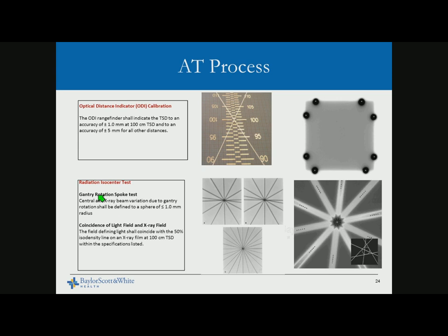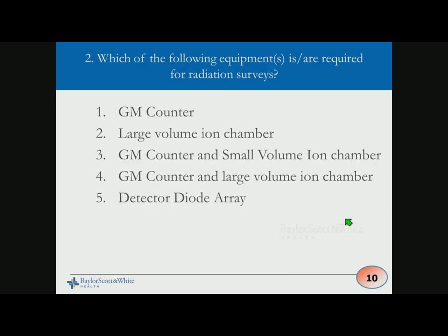Radiation isocenter testing is very important. We do this with star shots — the conventional way using a slit made with collimators. This test varies depending on how well the X or Y jaws are calibrated, but we can still make a good estimate of what the radiation isocenter is.